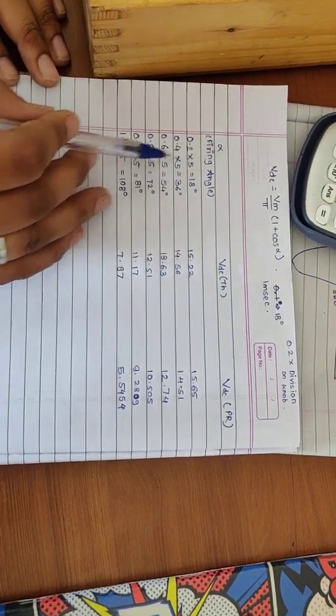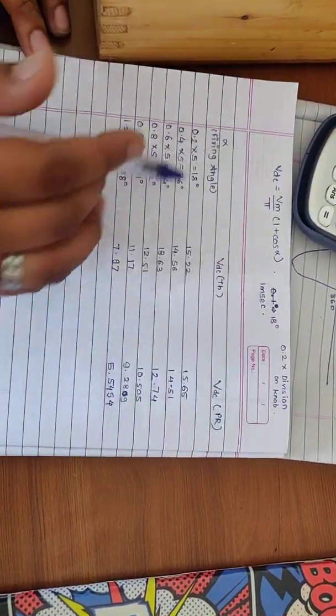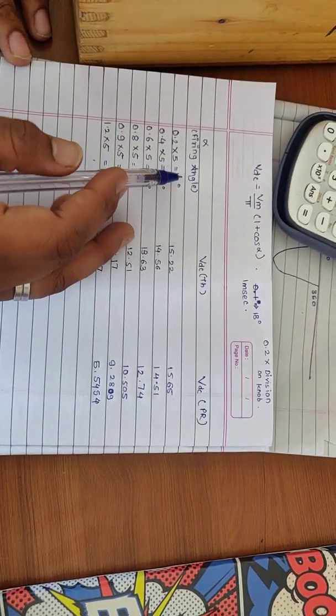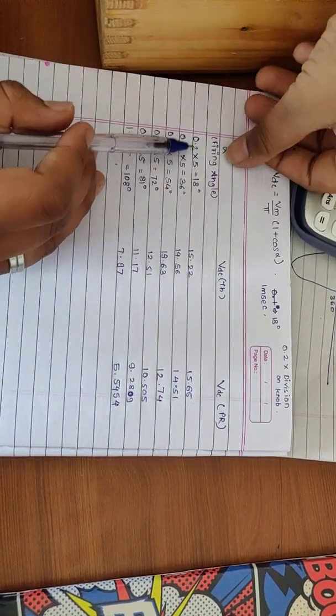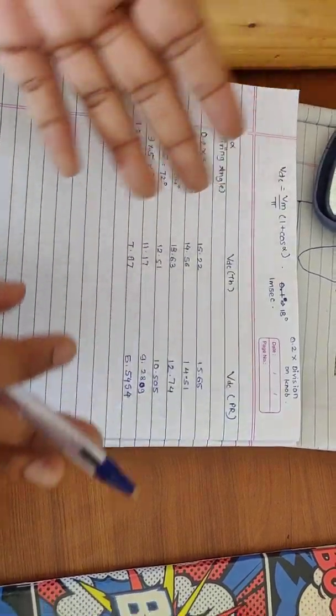So when the alpha angles are calculated we can get the theoretical and practical values. Considering we have calculated the angle from 18 degrees to 100 degrees variation, when alpha is increasing the voltage level is continuously decreasing in both theoretical and practical values.